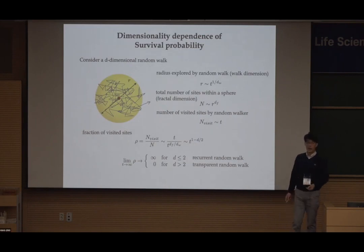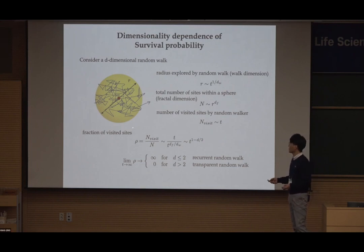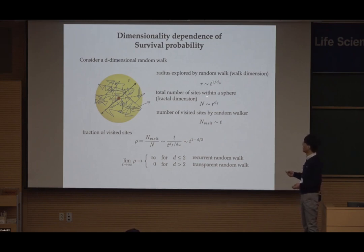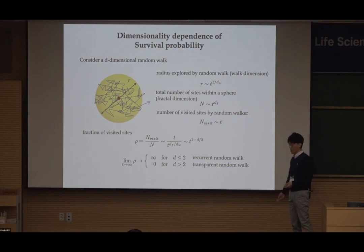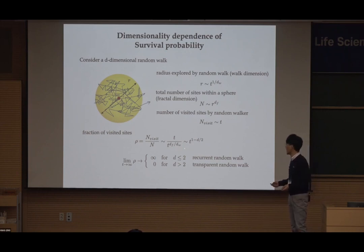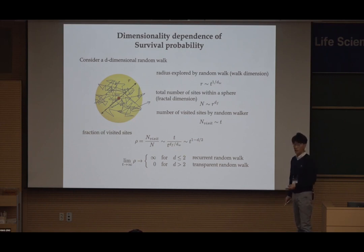This dimensionality dependence can be understood by a simple scaling argument. For a d-dimensional random walk, the radius explored is given by time to the power of 1/(walk dimension). The total number of sites within the explored volume is determined by the fractal dimension, and the number of visited sites is proportional to time. Therefore, the fraction of visited sites goes as t to the power of (1 − d/2). In dimensions higher than 2, this fraction becomes vanishingly small, so the walk becomes very transparent.